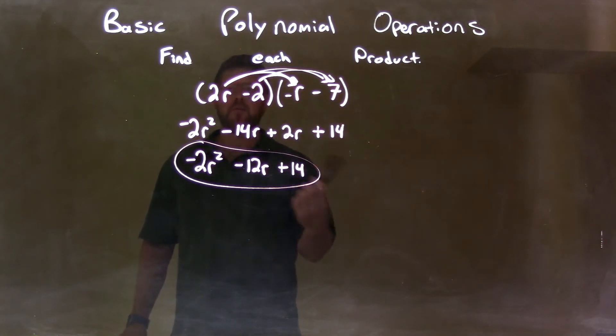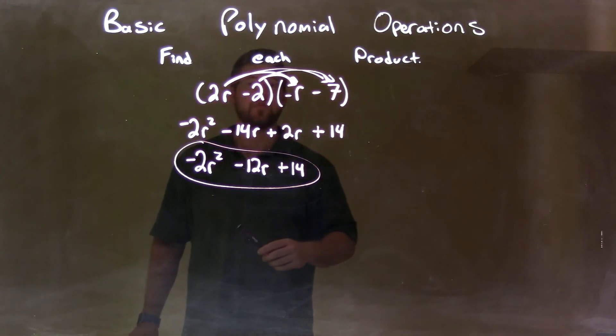Then we bring down everything else, and our final answer again is negative 2r squared minus 12r plus 14.